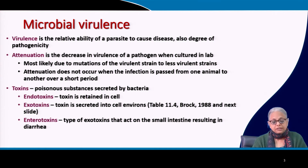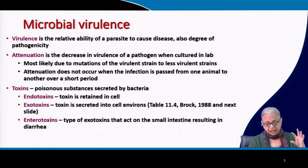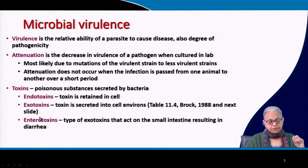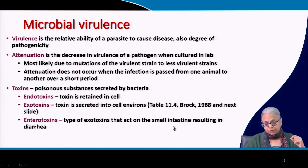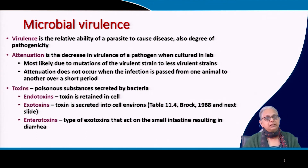By definition, endotoxins are when the toxin is retained within the microbial cell. If it is an exotoxin, it means the toxin is secreted into the cell environment. Within exotoxins, we also have enterotoxins. Entero, by definition, means within the gastrointestinal tract. These types of exotoxins that act in the small intestine can cause diarrhea and stomach upset. Very often when we talk about contaminated food and water causing a stomach upset or diarrhea, that is because of perhaps these types of toxins.